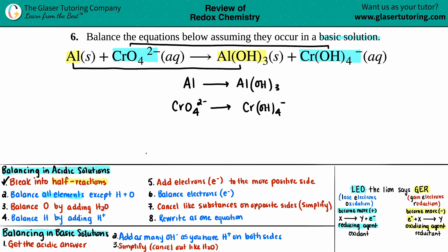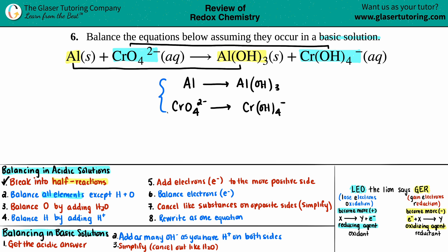Step two: balance all elements except hydrogen and oxygen. Don't balance those yet — just balance all the other elements. We have one aluminum on each side, so that's already balanced. Same thing here: one chromium on each side, so that's good. Step two is already balanced for both equations.